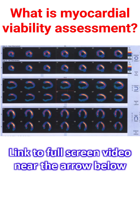In coronary bypass surgery, the blocked blood vessels are bypassed in a surgery which involves opening up the chest fully or partially. There are two types of viable myocardium.